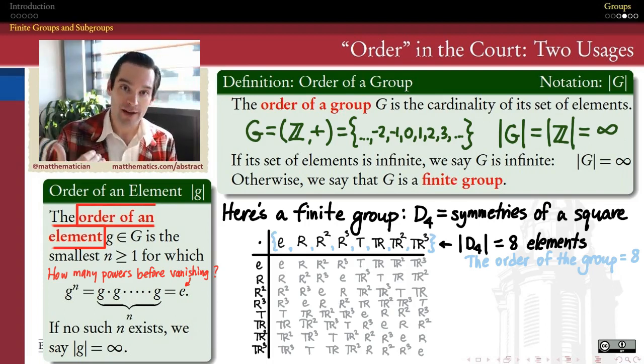be very careful to distinguish between order of a group, which is how many elements are in this group, and order of an element in that group, which is what power of this element gives me back the identity. And we agree that that power has to be greater than or equal to one, because by convention the zeroth power of any element is always equal to the identity.